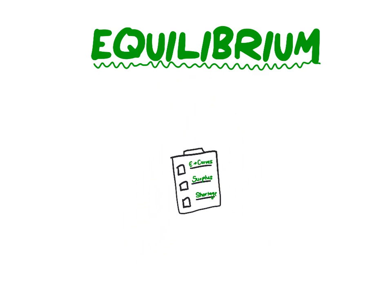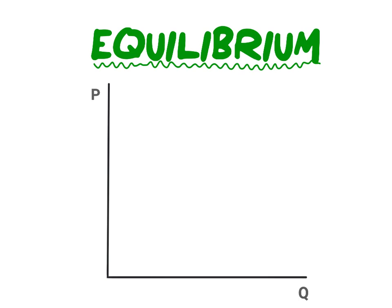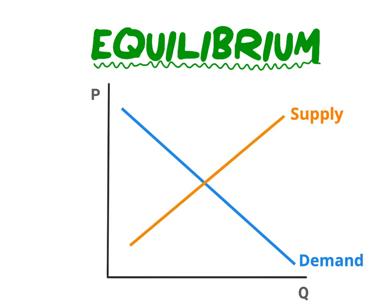In order to illustrate equilibrium in the market, we will start with the following: price will be on our y-axis and quantity will be on our x-axis. We will have our demand and then our supply curve. Where supply intersects demand, this will be our equilibrium point. At equilibrium we will obtain our equilibrium price and equilibrium quantity. Our equilibrium point indicates where quantity demand is equal to quantity supplied.